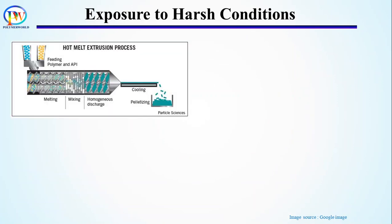The first step where polymers experience extreme conditions is during the extrusion process. Extrusion is performed well above the melting temperature of the polymer, at very high pressure, and in air which contains oxidizing agents like oxygen and metal. At such high temperature and pressure, the bonds connecting the monomers are highly susceptible to oxidation, and if not controlled, polymers can degrade severely, making the final product very weak and brittle.